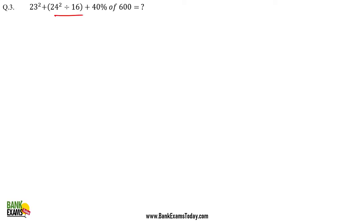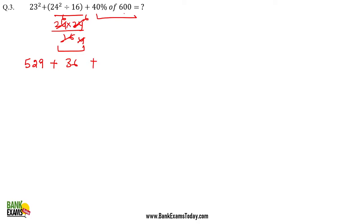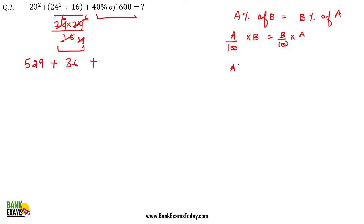Next question: 23 percent plus (24 squared divided by 16). First, solve the bracket: 24 squared is 576, divided by 16 equals 36. Then 36 plus 23 squared gives 529. Now we need 40 percent of 600. There is a property in percentage: a percent of b is always equal to b percent of a, because both equal ab/100. So instead of 40 percent of 600, we can write 600 percent of 40.